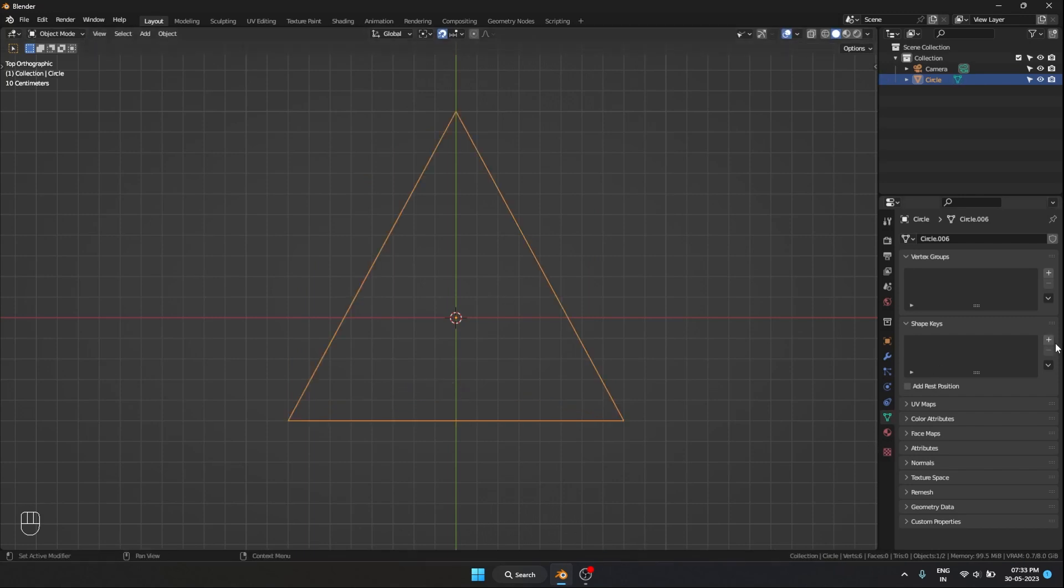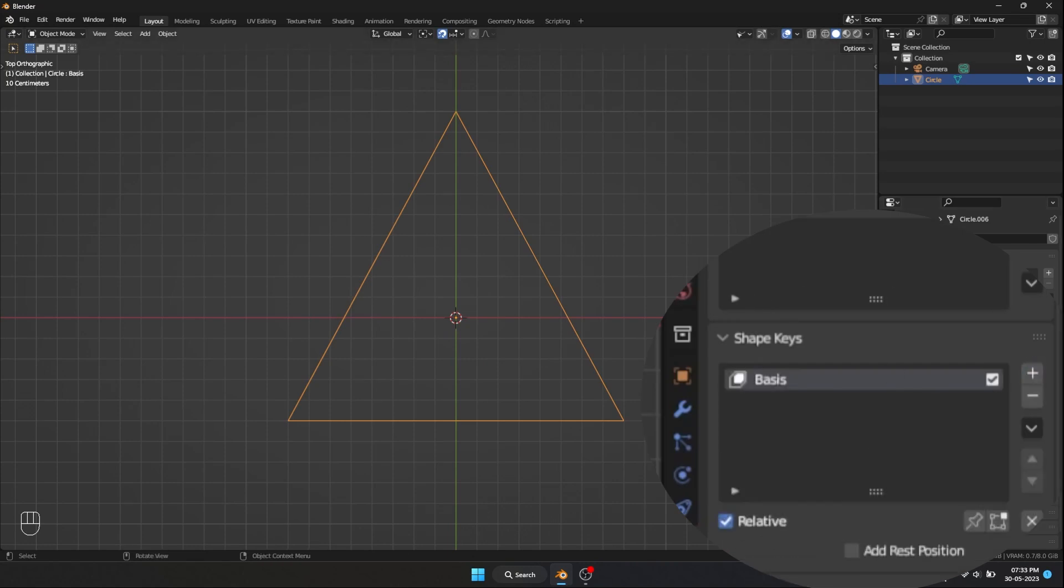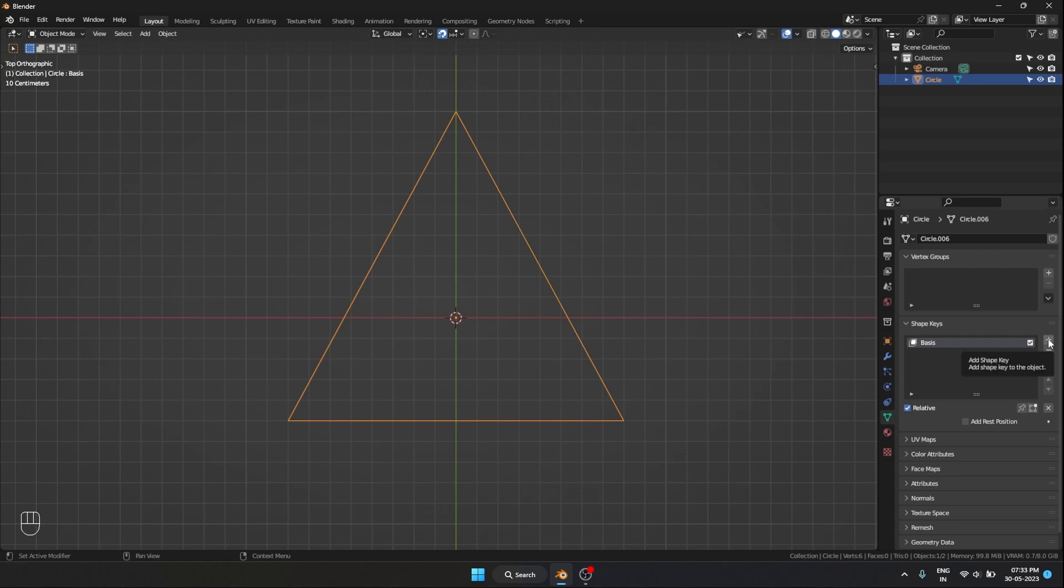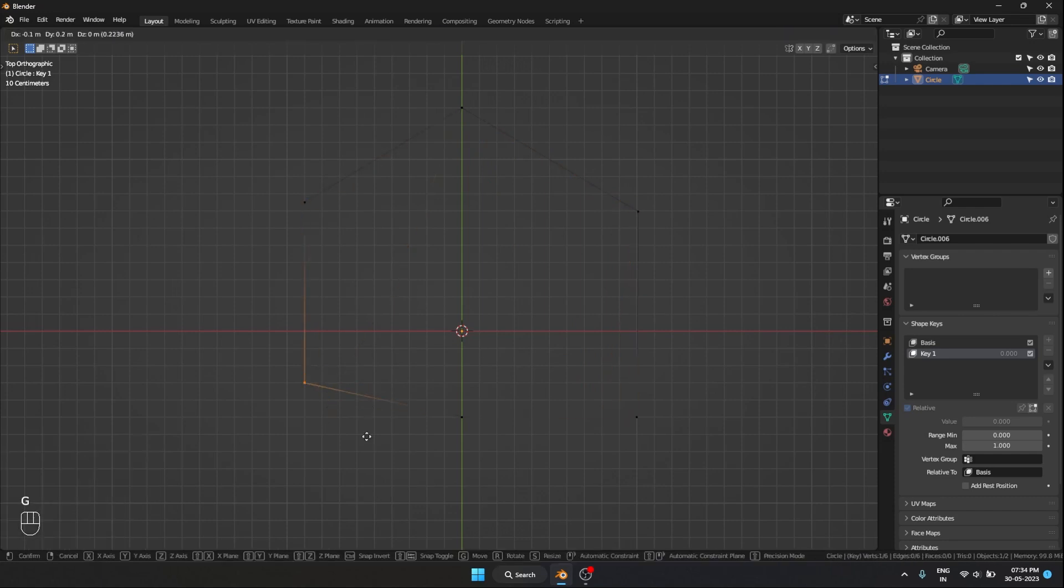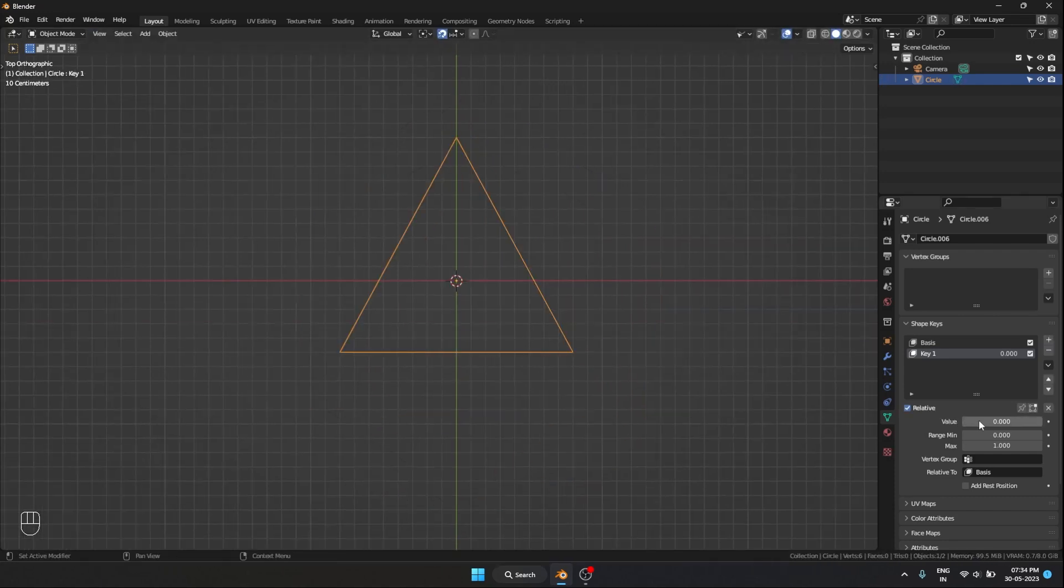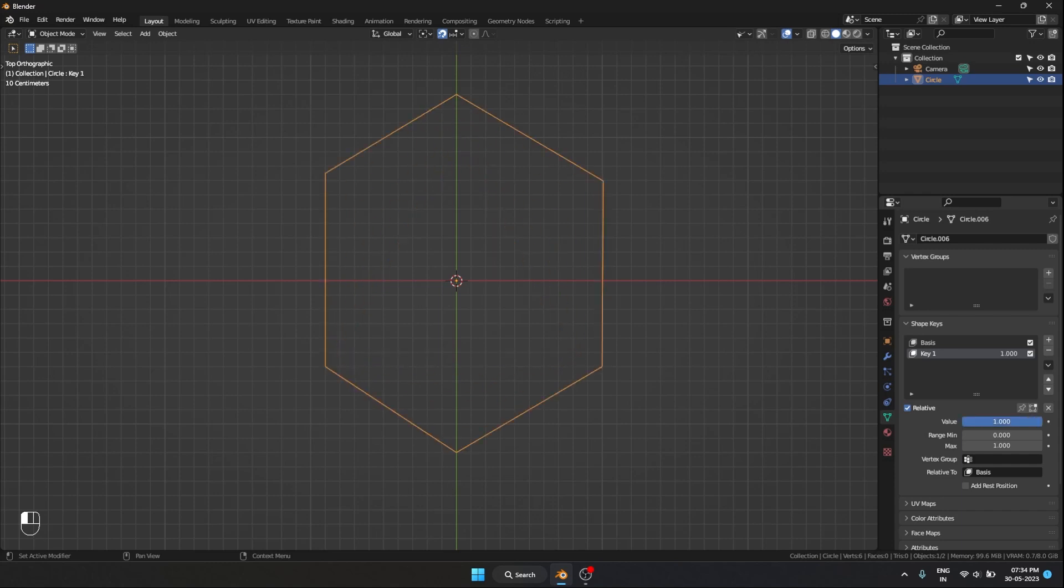So I'm going to go into our shape keys. And I'm going to hit plus, which means it is going to save this point positions. And I'm going to hit plus once more. Because we need to morph it to a different shape, right? And now what I'm going to do, so I'm going to move the points to create a hexagon. And now if I'm going to increase the value, you can see it is morphing between these two shapes. And that is a very quick overview on how shape keys work.